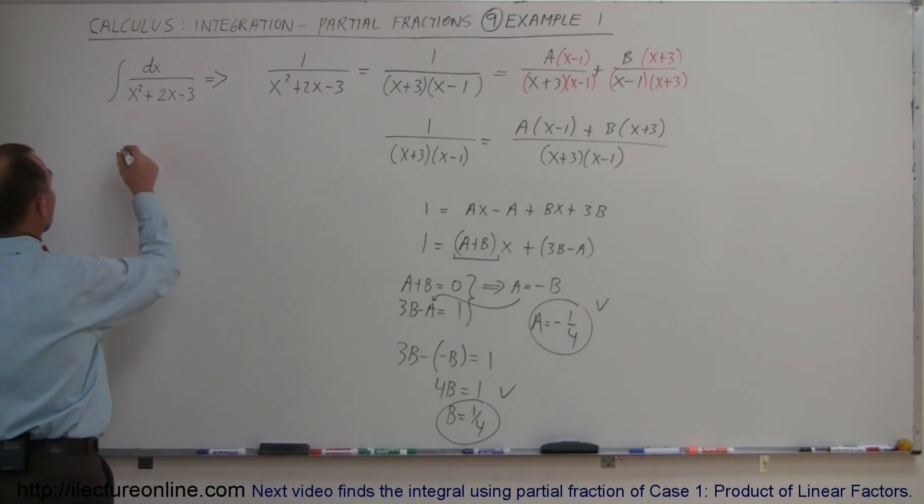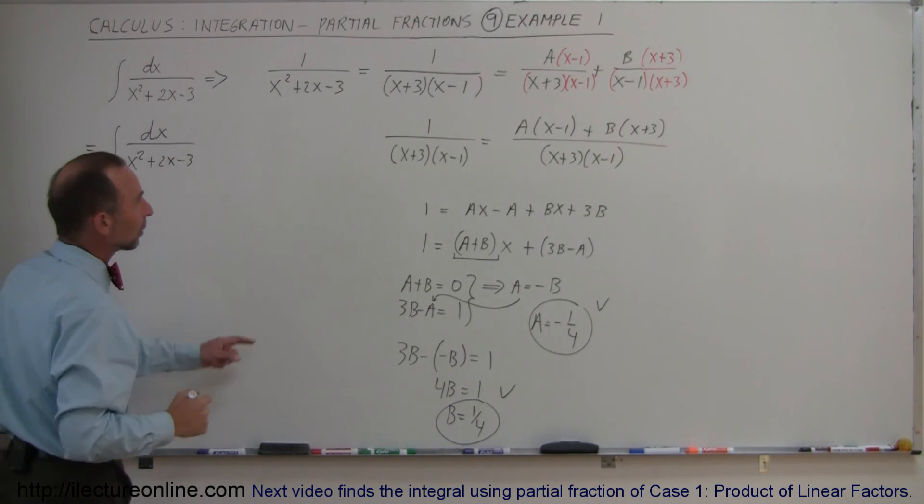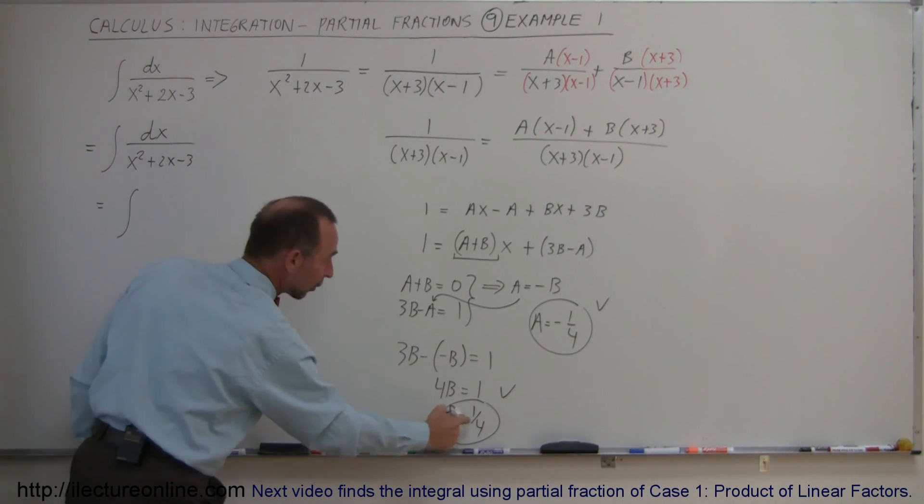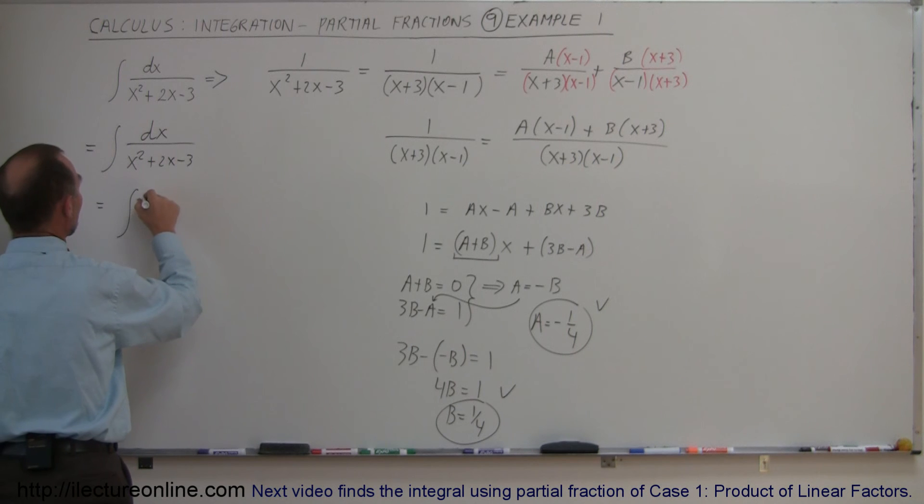I can come back over here and write this. That means that my integral of dx divided by x squared plus 2x minus 3 can be written as the sum of the two integrals. It can be written as the integral of A over x plus 3, and A of course is minus a quarter. So that would be minus 1 quarter over x plus 3 dx.